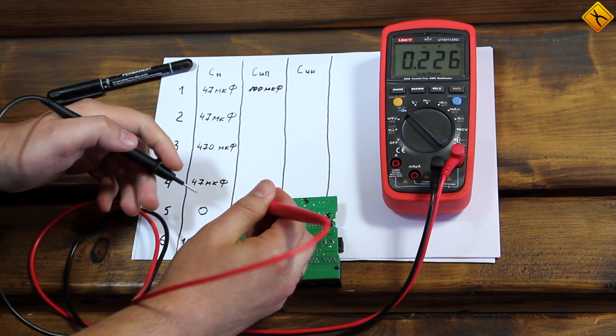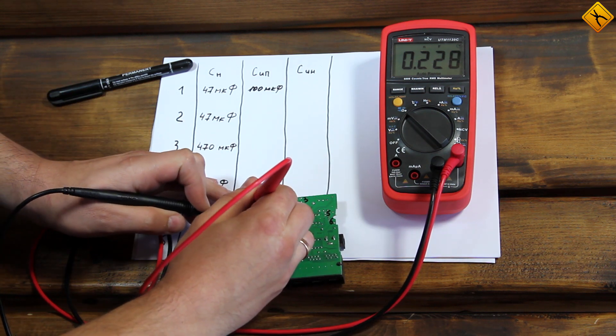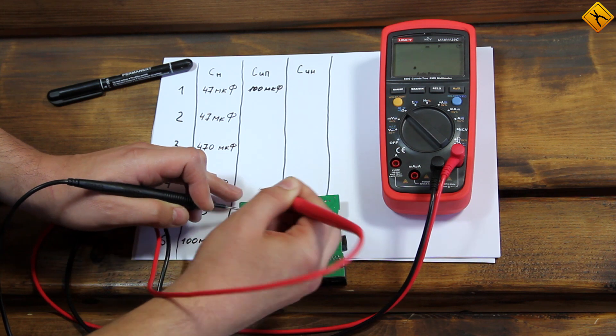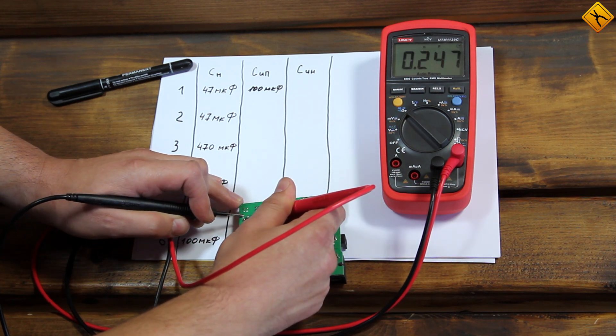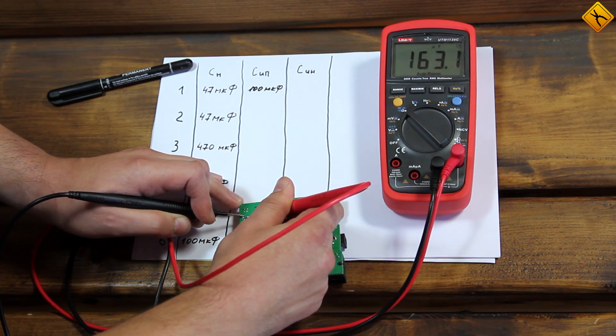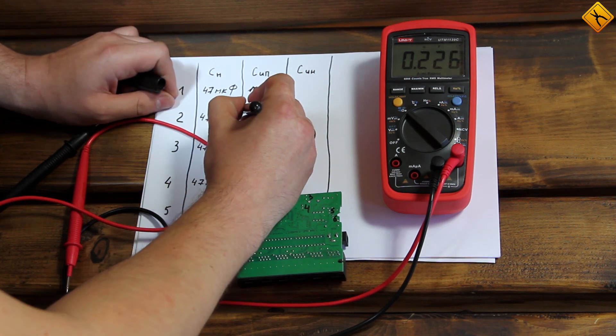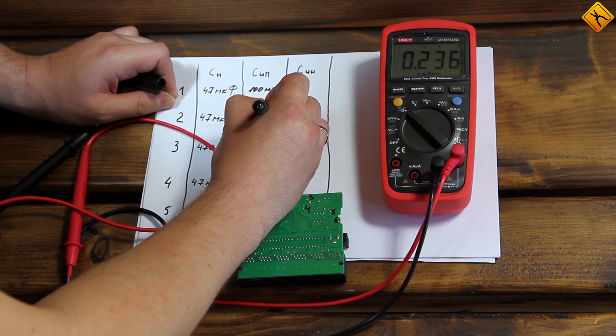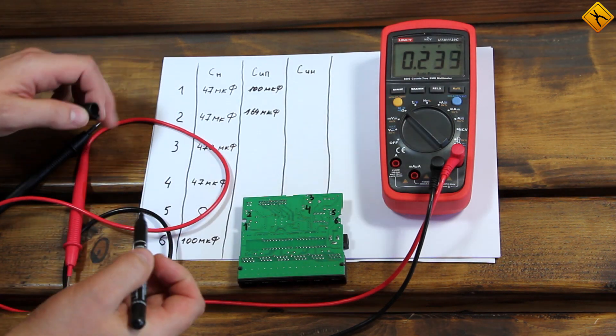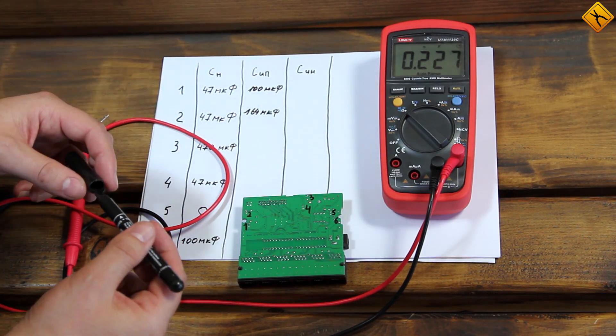Point two. Let me try again. Somewhere close to 164. 164 microfarads. Obviously, its capacitance is significantly different from the value printed on the capacitor.